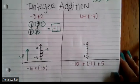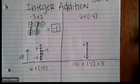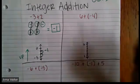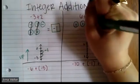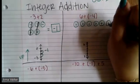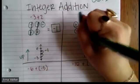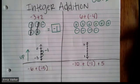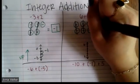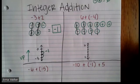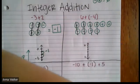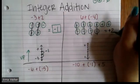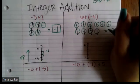Let's look at another example: six plus negative four. You can pause the video if you want to try it on your own. I have six positives and four negatives. Let's cancel out our zero pairs — here's a pair, here's a pair, here's a pair, here's a pair. Four pairs cancel out, and what's left over are two positives. So the answer to six plus negative four is positive two.